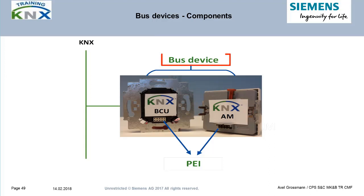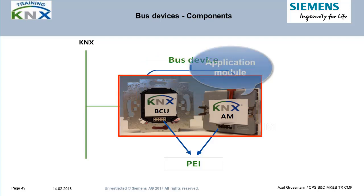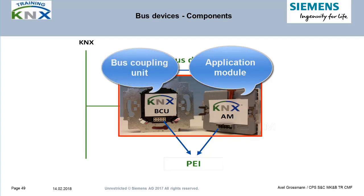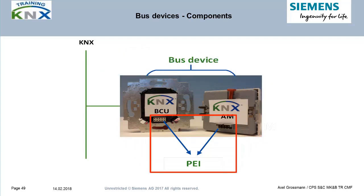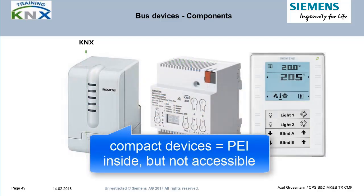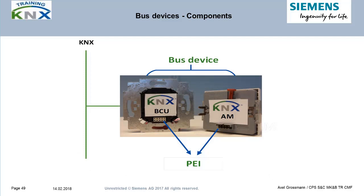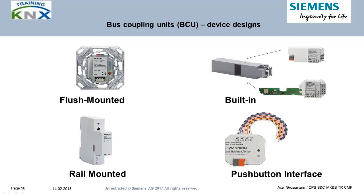Communicating bus devices can also be called subscribers, but we stay with the wording 'bus devices.' In principle, they consist of an application module and a bus coupling unit connected by the PEI. Often these parts are already assembled and fixed to each other by the manufacturer to form one single unit. Then there is no accessible PEI anymore, although internally it still exists in some way.